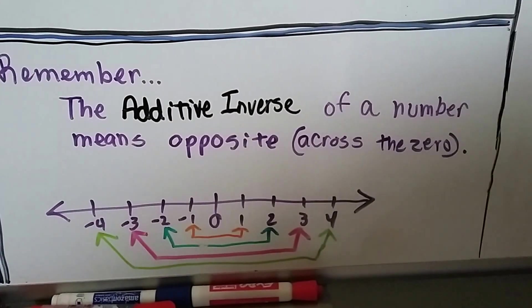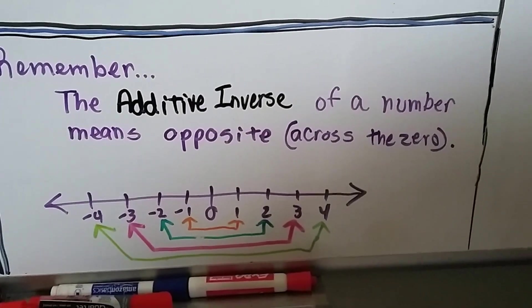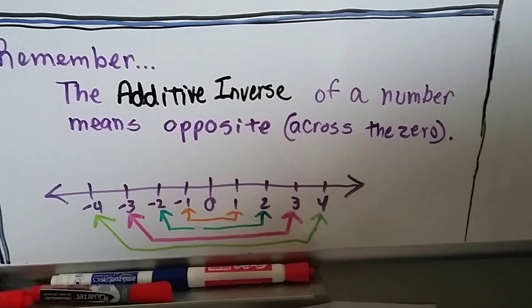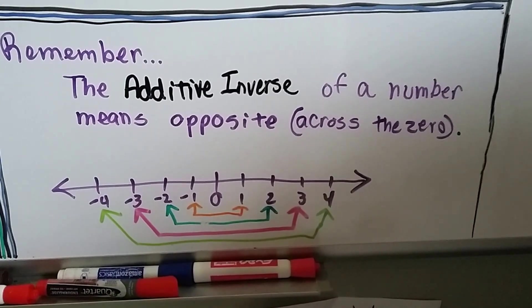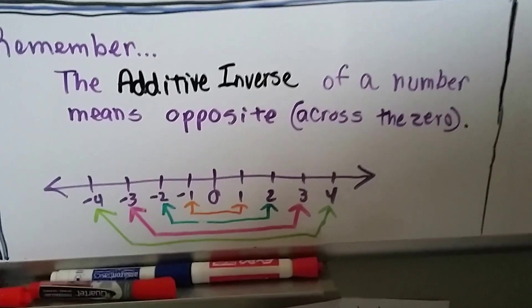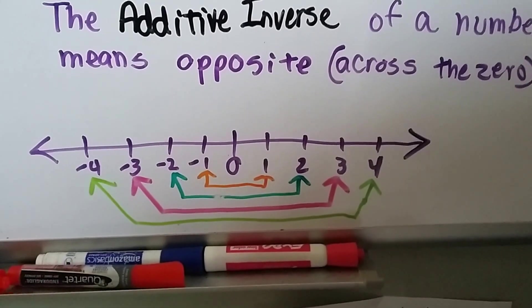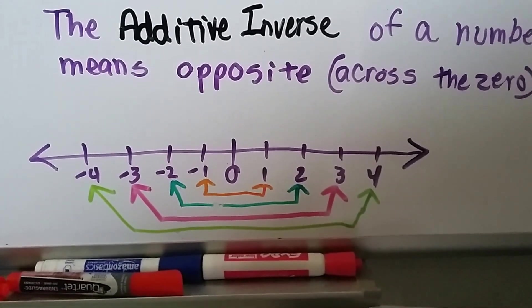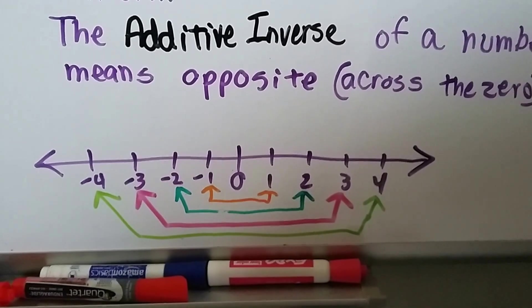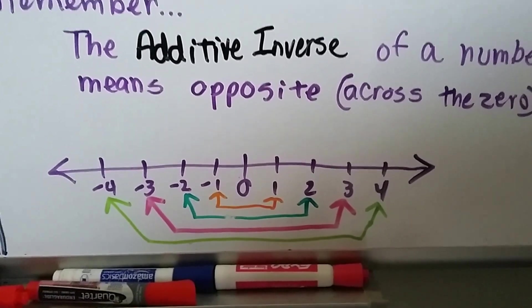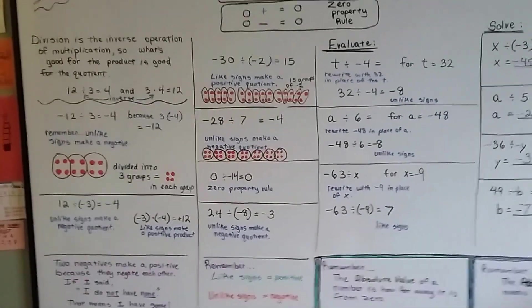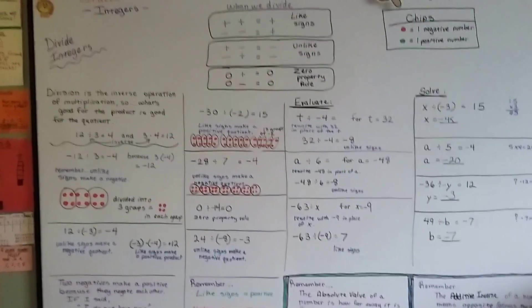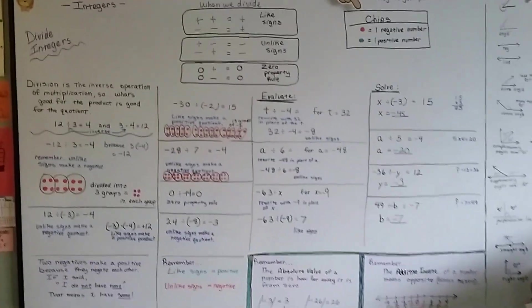The additive inverse of a number means the opposite across the zero. The additive inverse of negative 3 is positive 3. The opposite of 4 is negative 4, the opposite of 1 is negative 1, the opposite of negative 2 is positive 2. Just remember: like signs give you positive, unlike signs give you negative. We're going to continue talking about integers, and I'll see you in the next video.